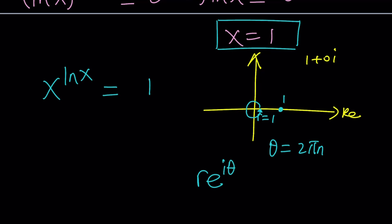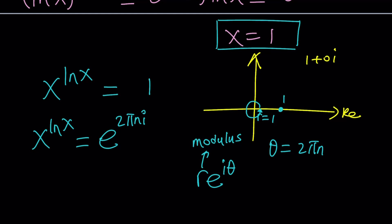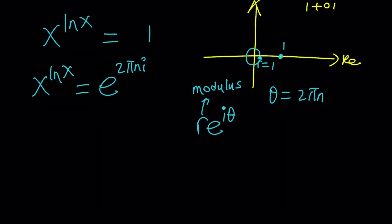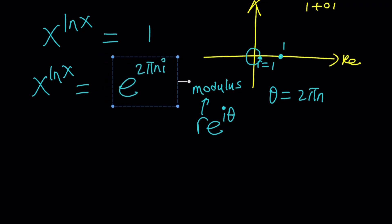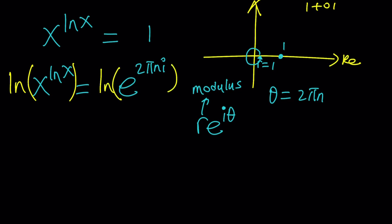Here θ is the angle we discussed and r is the modulus or absolute value of the complex number. So we replace 1 with 1 times e to the power 2πni. Then we take the natural log of both sides. By using properties of logarithms, we move the exponent to the front.